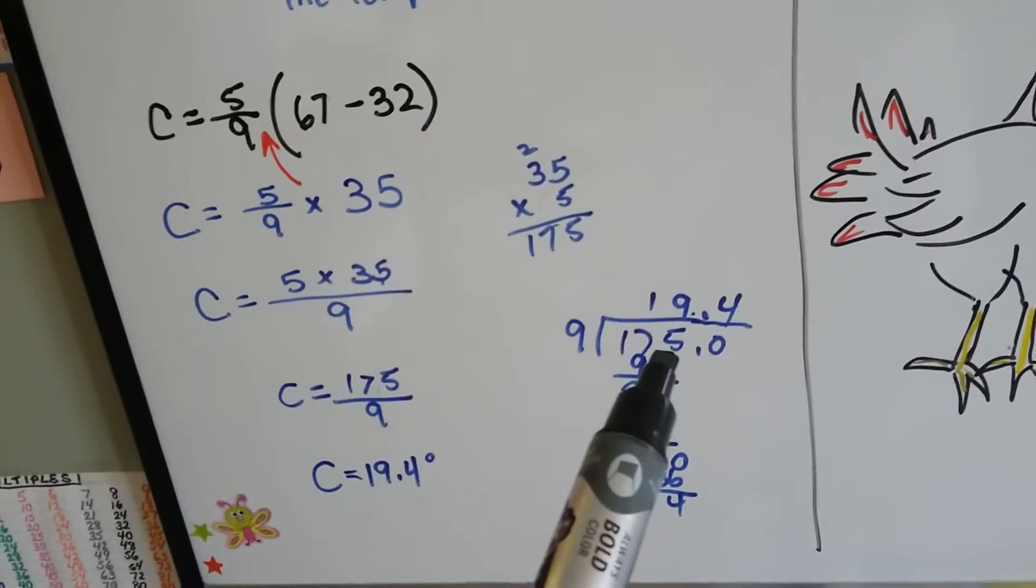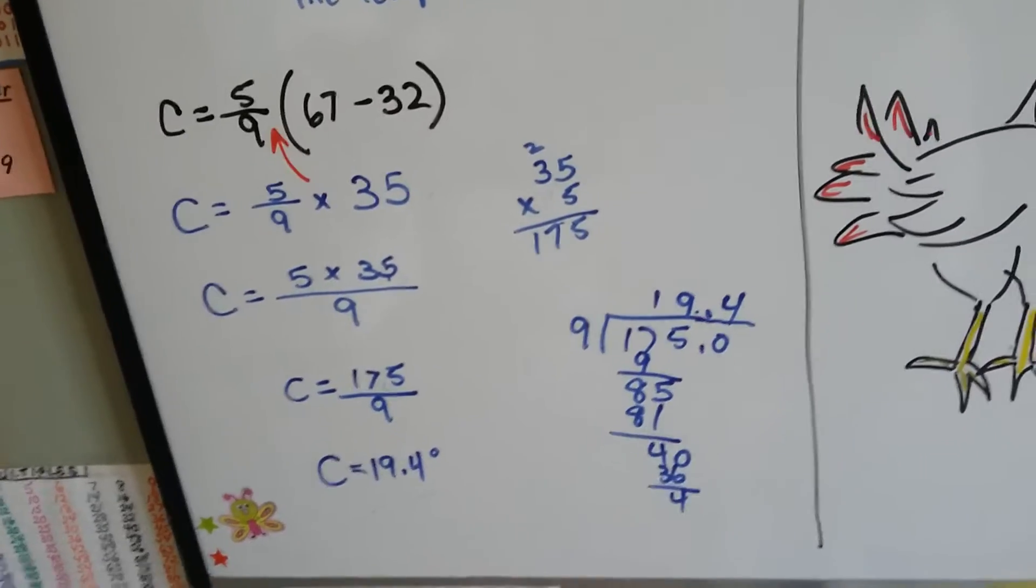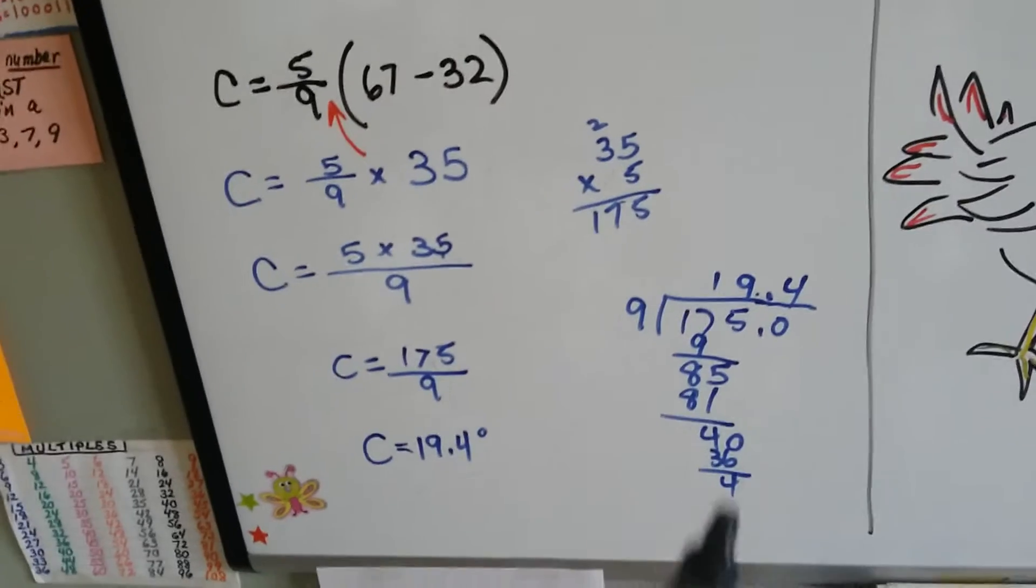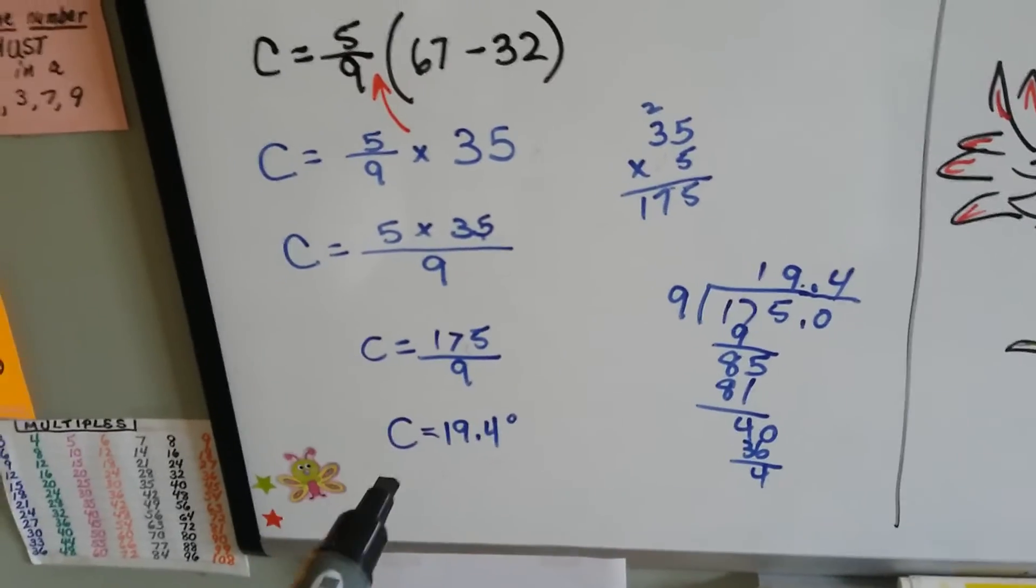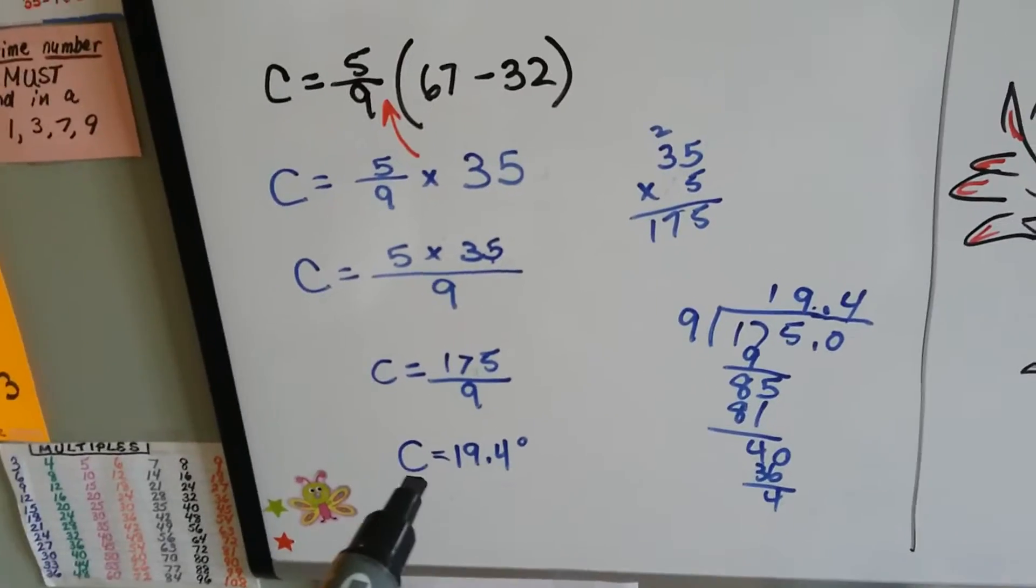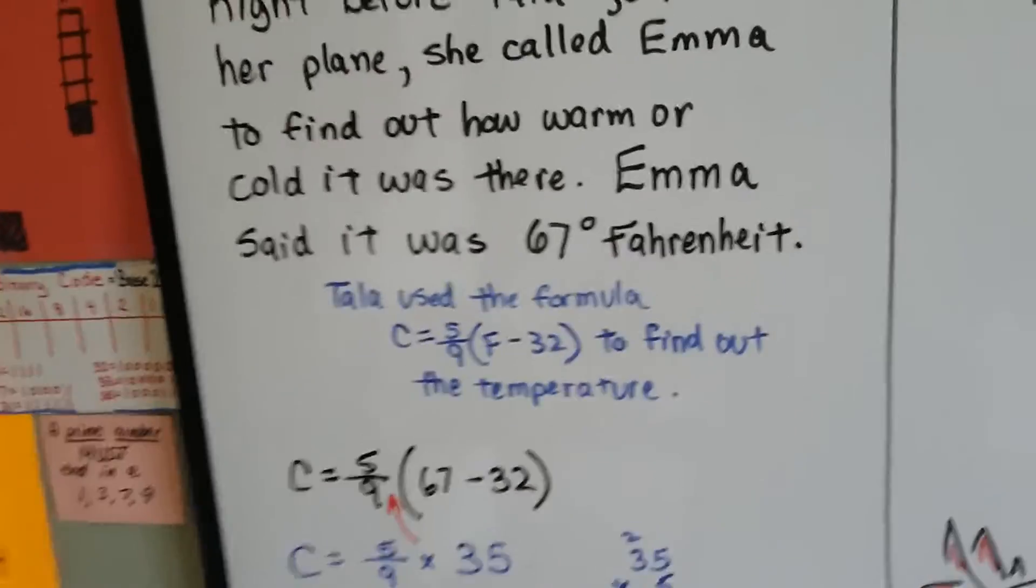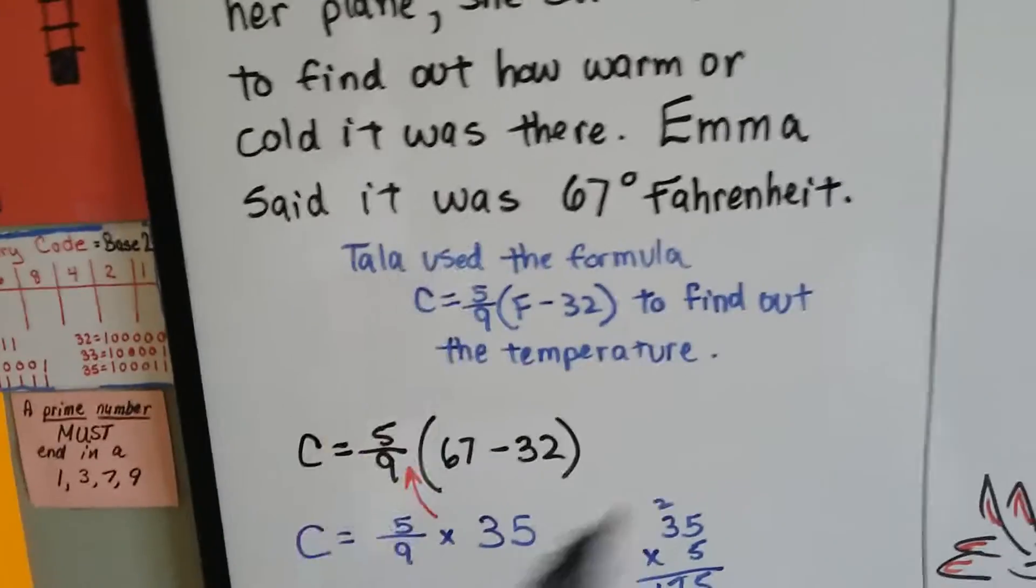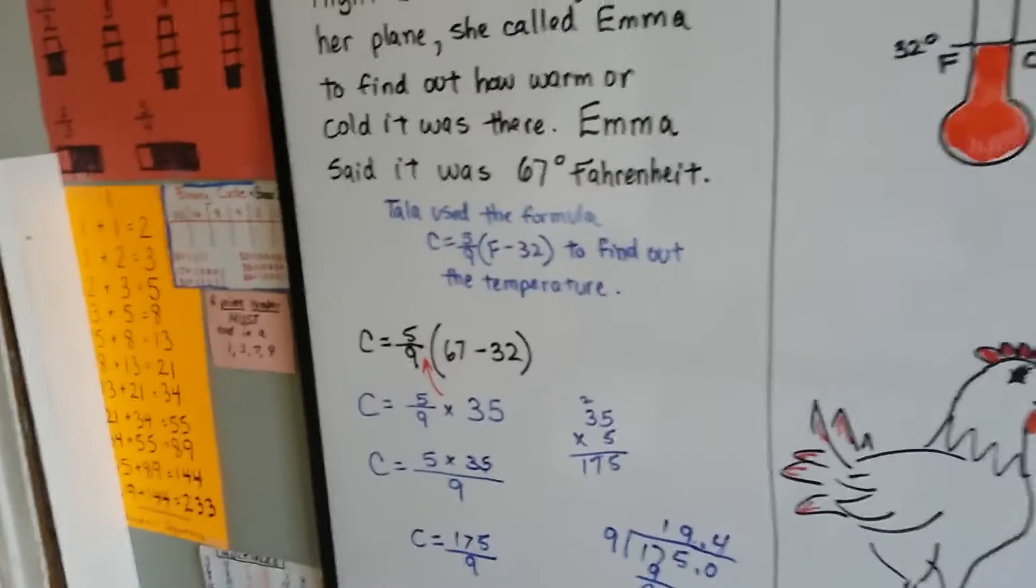9 goes into 175, 19.4 times, when we do the long division. That means that it's about 19.4 Celsius, and now Tala understands. If it was the other way around, I would have to do the same thing, because I wouldn't know what it is in Celsius.